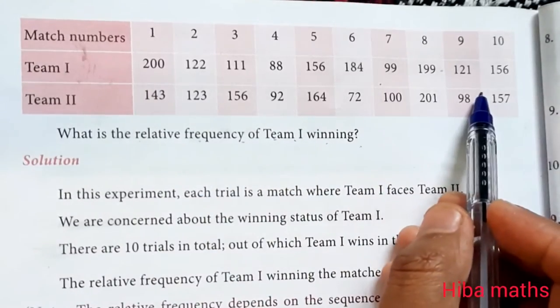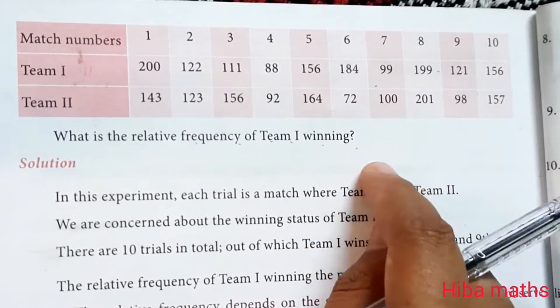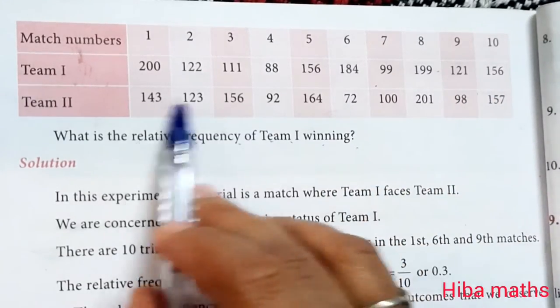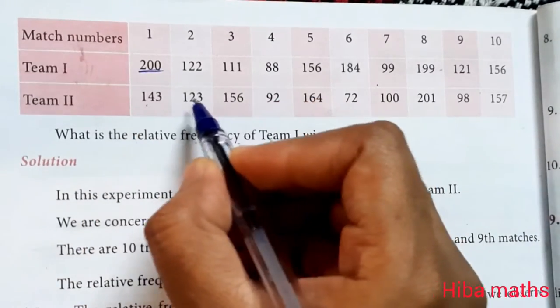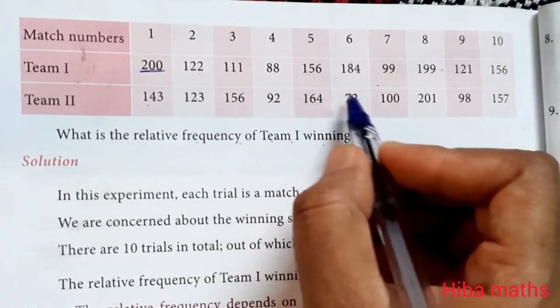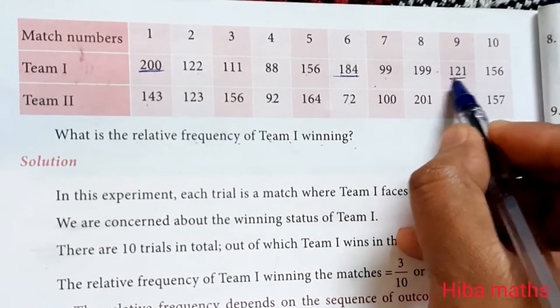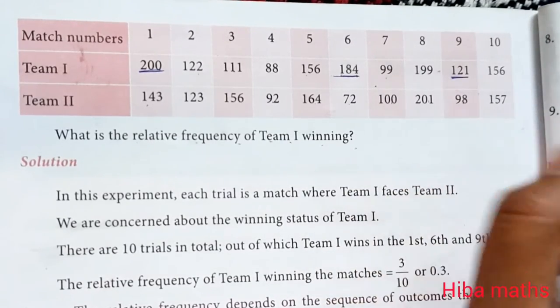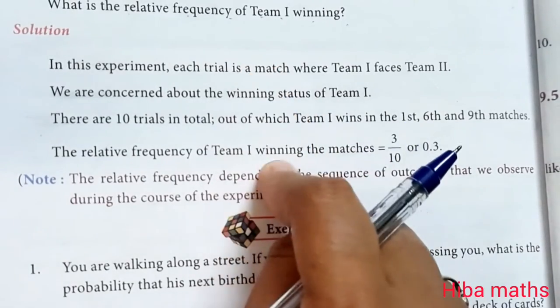Team 1 win is the relative frequency. If you look at the total 10 matches, you will be able to see when Team 1 wins. This is 143 and this is 200, this is less. This is less. This is the score and you will be able to see Team 1 wins the 9th match. So for the first time Team 1 wins. This is the way we will go through the example.